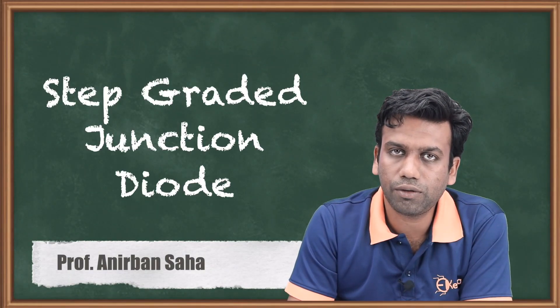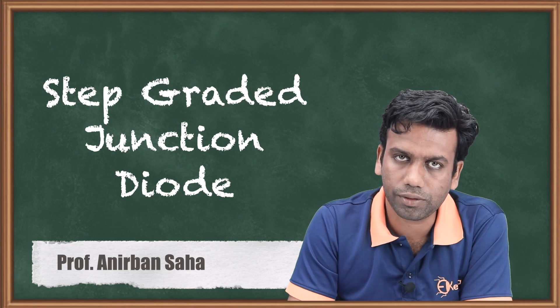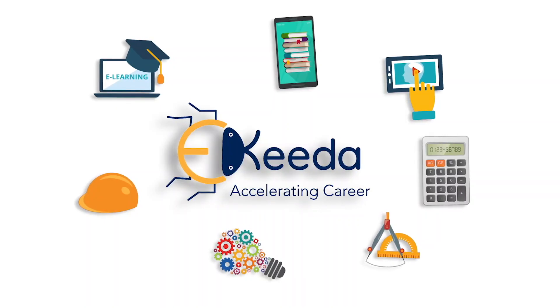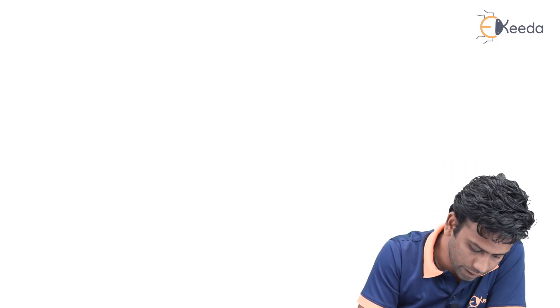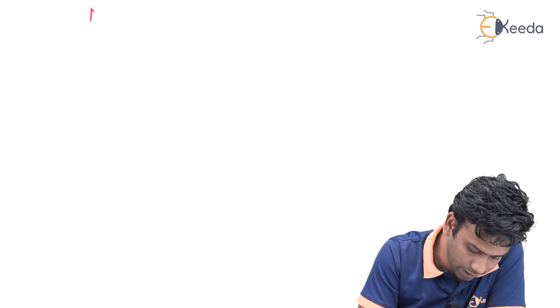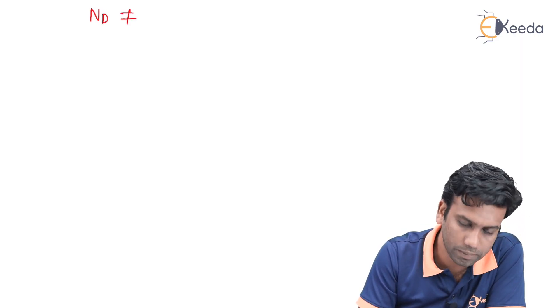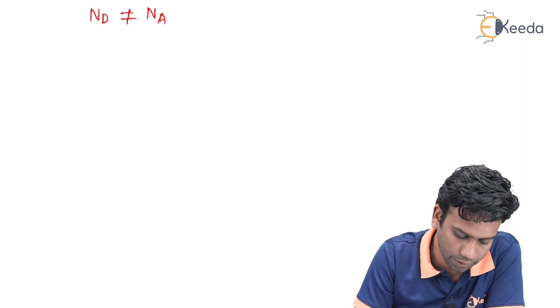Hello friends. In this video we are going to discuss the step graded junction diode. A step graded junction diode is one where the doping concentration of the N side, that is N_D, is not equal to the doping concentration of the P side, that is N_A, in a semiconductor diode.